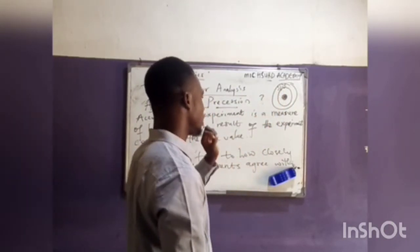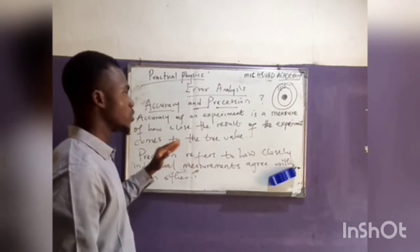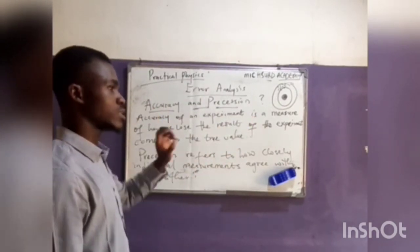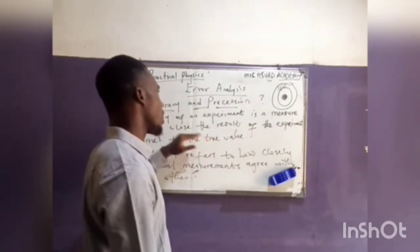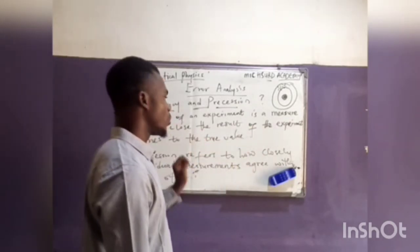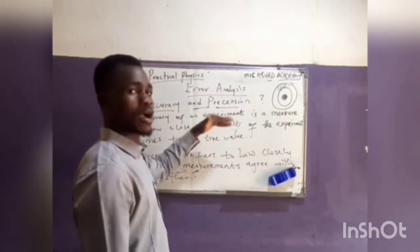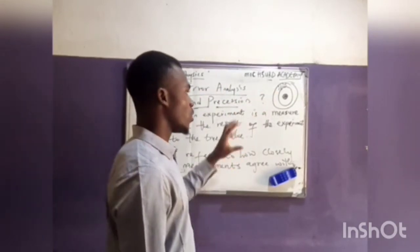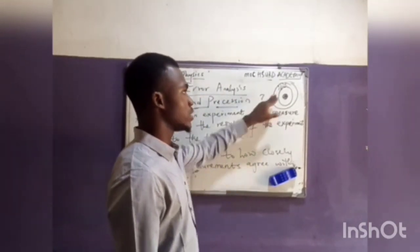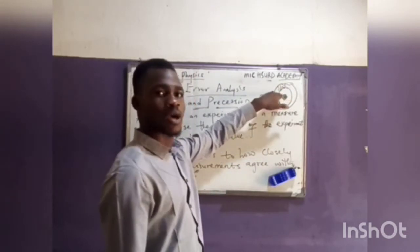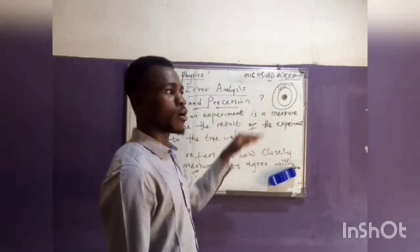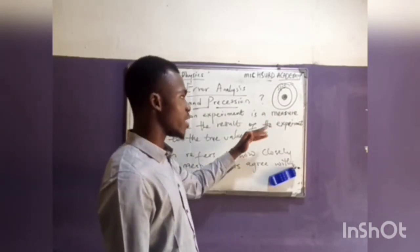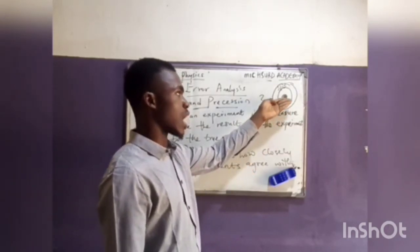So accuracy is the result of the experiment coming to the true value. Once we get the actual value, we are accurate. But with precision, you might not be accurate — the point is that the values or points you get all seem to align at a particular point. We call that precision.